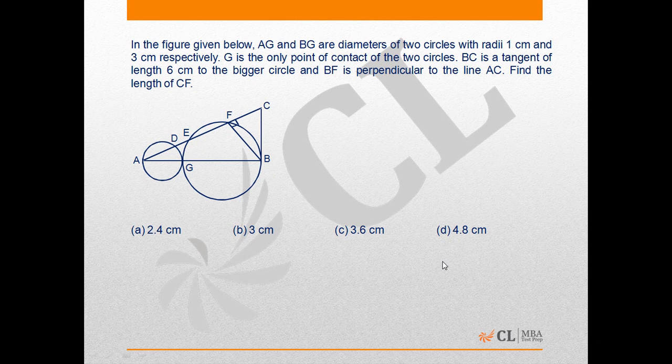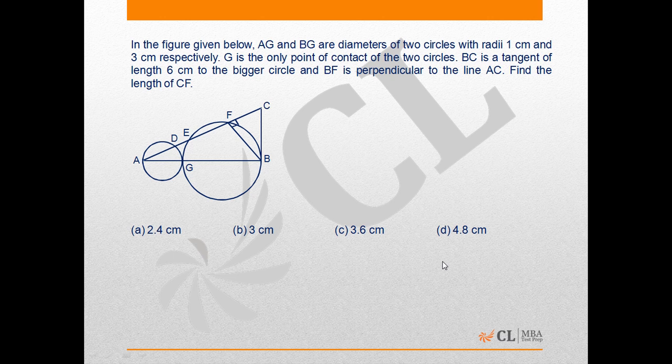In this problem, AG and BG are diameters of two circles with radii 1 cm and 3 cm respectively, which means AG is 2 and GB is 6.